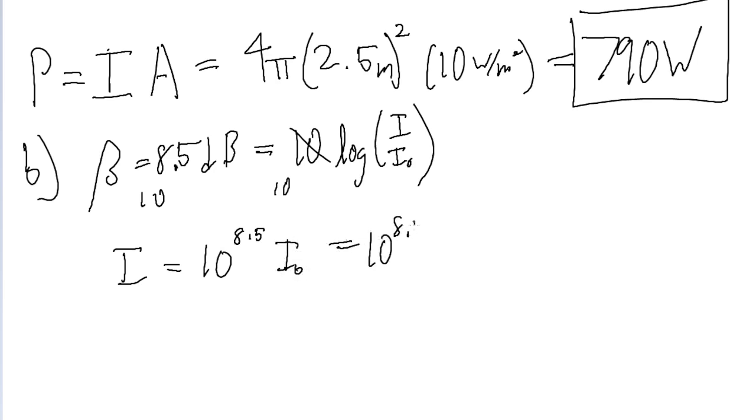So I'll put this into a calculator. 10 to the power of 8.5 times 10 to the power of negative 12 watts per meter squared is equal to 3.162 times 10 to the power of negative 4 watts per meter squared.